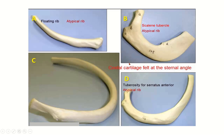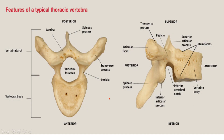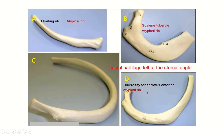These are the atypical ribs: the first rib, the second rib, and the floating ribs (11th and 12th). A typical rib also appears in the diagram for comparison.